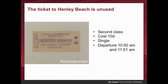The second class designation is meaningless because all tickets on that line were second class anyway — there was no first class. It was a single ticket, which isn't meaningful either because the return ticket was exactly twice the value of the single, so he wouldn't have saved money buying a return. Trains departed at around 10:50am and 11:51am, so he could have been on either, though more likely the later one given the time he checked his bag in.